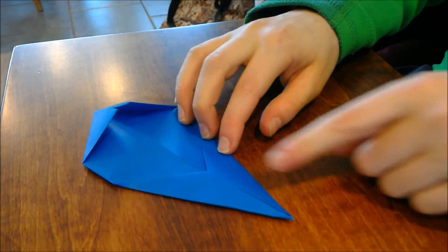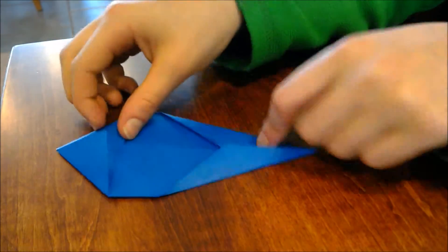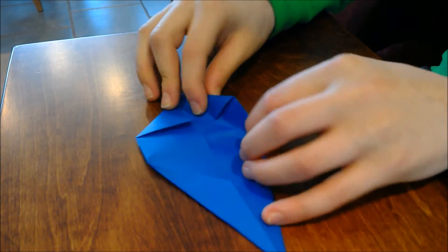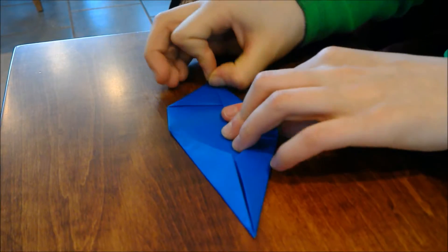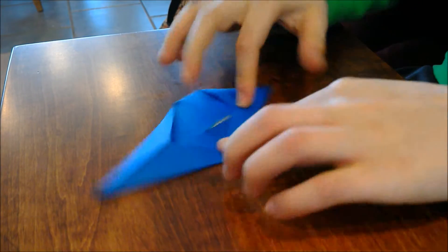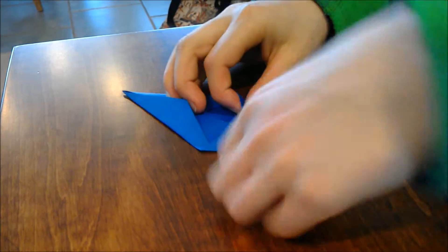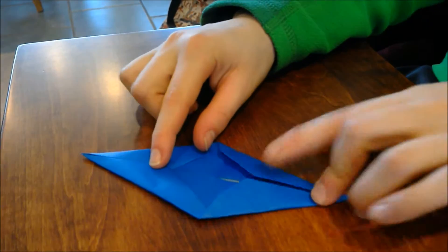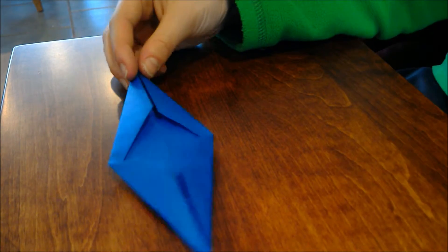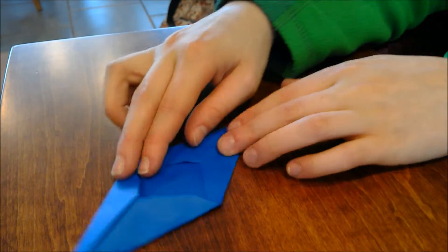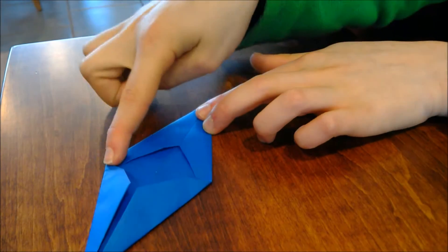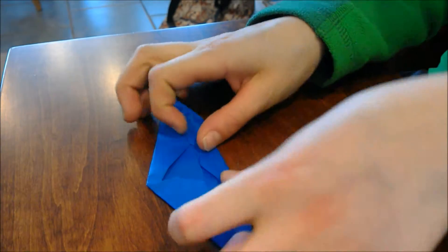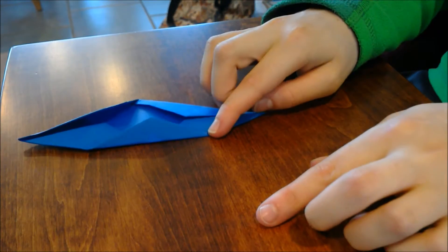And make sure you do two on one side before you do the two on the other side, otherwise it won't turn out well. Now you have a skinny sort of diamond. Then you're going to take both points here and try to be as exact as you can and just fold them to the center like that.